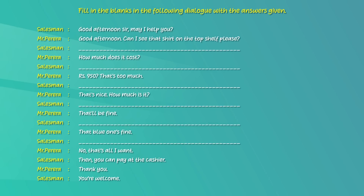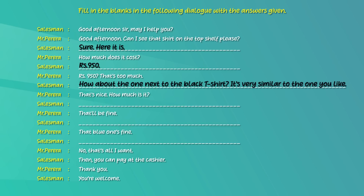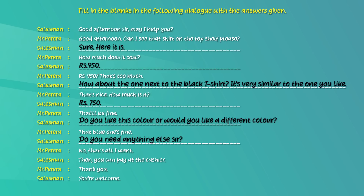Now let's complete the dialogue between a salesman and Mr. Pereira. Salesman: 'Good afternoon sir. May I help you?' Mr. Pereira: 'Good afternoon. Can I see that shirt on the top shelf please?' Salesman: 'Sure, here it is.' Mr. Pereira: 'How much does it cost?' Salesman: '950 rupees.' Mr. Pereira: '950 rupees? That's too much. How about the one next to the black t-shirt? It's very similar to the one you like.' Salesman: 'That's nice. How much is it?' Mr. Pereira: '750 rupees. That'll be fine.' Salesman: 'Do you like this color or would you like a different color?' Mr. Pereira: 'That blue one's fine.' Salesman: 'Do you need anything else sir?' Mr. Pereira: 'No, that's all I want.' Salesman: 'Then you can pay at the cashier.' Mr. Pereira: 'Thank you.' Salesman: 'You're welcome.'